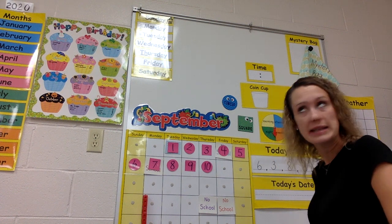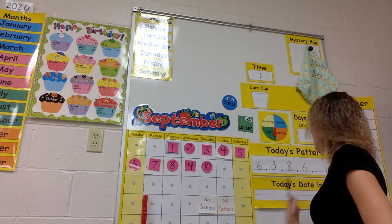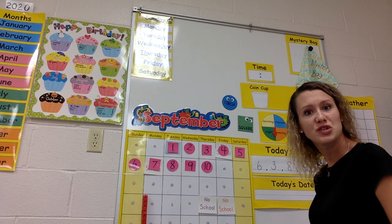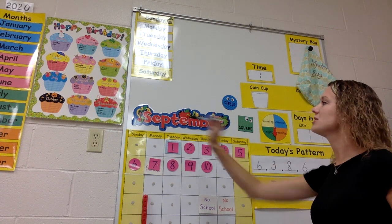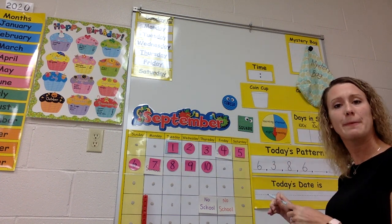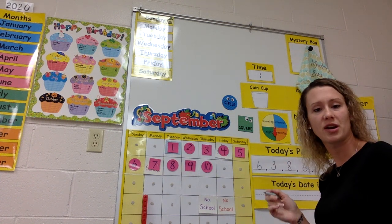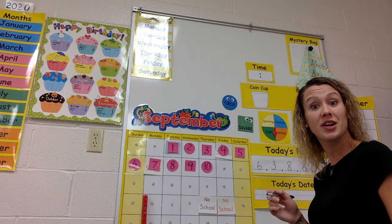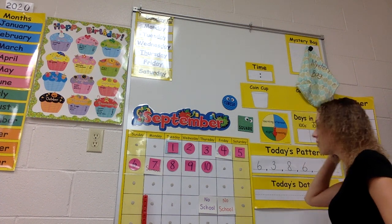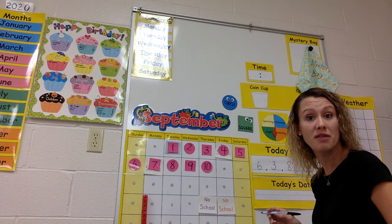Now we can write the date. We need to write our month first. I need you to tell me what letter starts off our month of September. Letter S — you got it. So it's uppercase because it's the name of the month. It's important, just like your name. You have an uppercase letter.